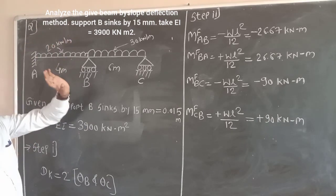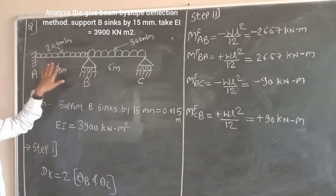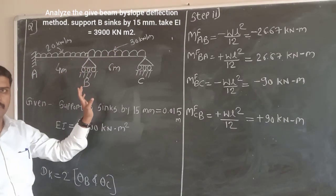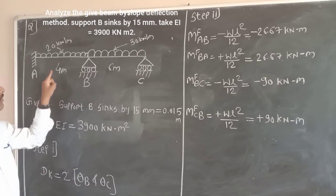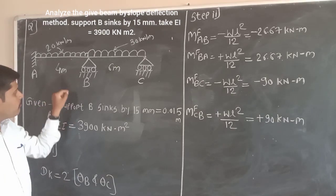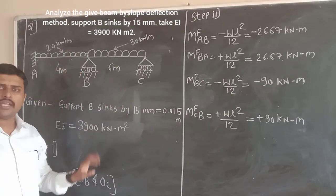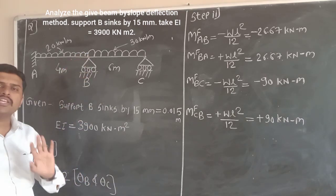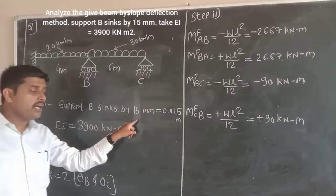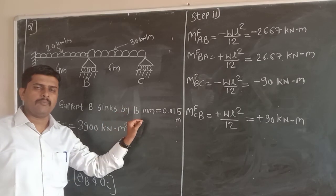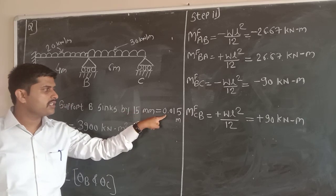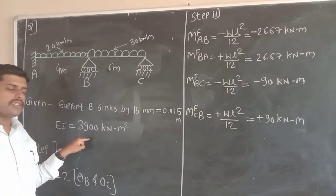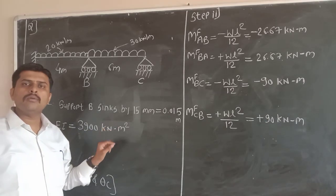Here is the question. The beam consists of two spans: span AB and span BC. In the given problem, support B sinks by 15 mm — that is, it moves downwards by 15 mm. So delta is 15 mm, which we convert to meters: 0.015 m. EI is also given, that is 3900 kNm².